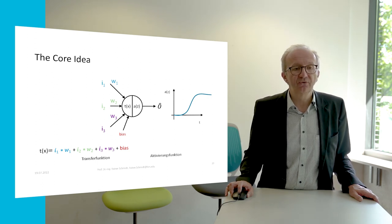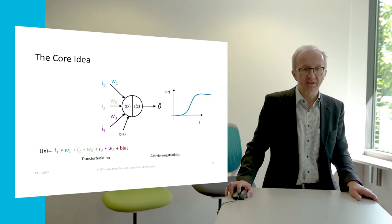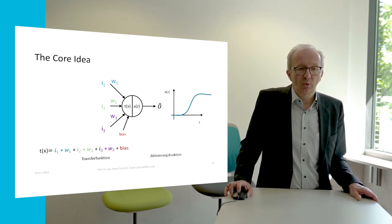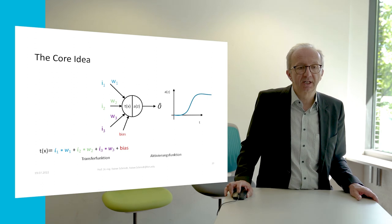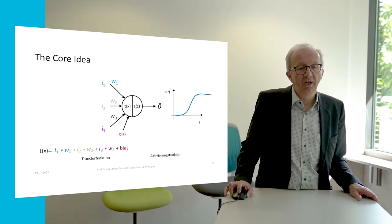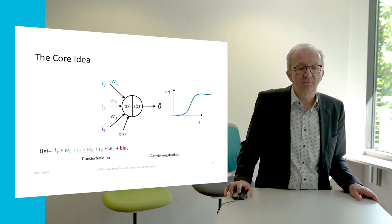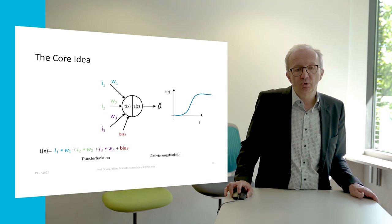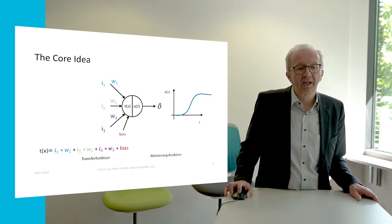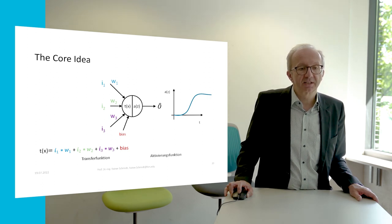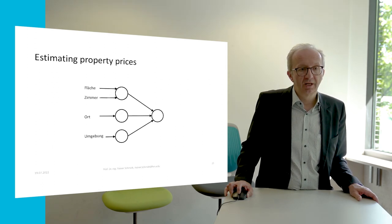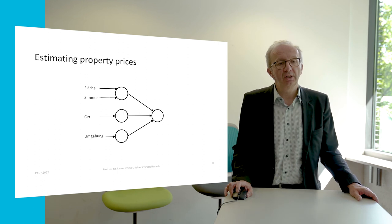The strength of this influence is represented by so-called weights. For each input we have a weight which defines how strongly that input influences the later outcome. In the transfer function, all these inputs with their weights are summed up, and we also add a little bias to it. The result is then handed over to an activation function that translates the result of the transfer function into an output that is further propagated within the network.